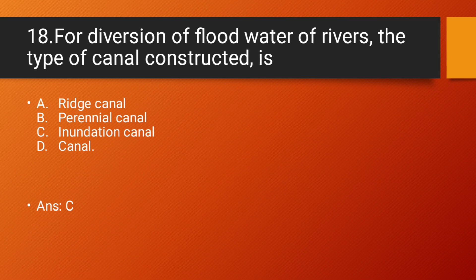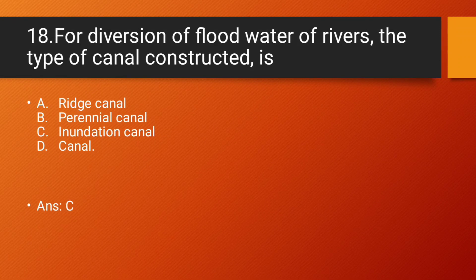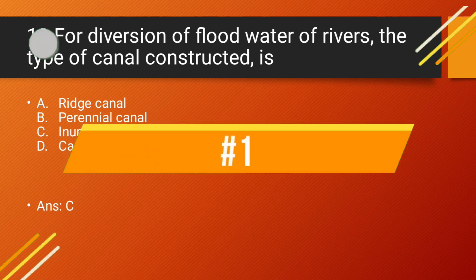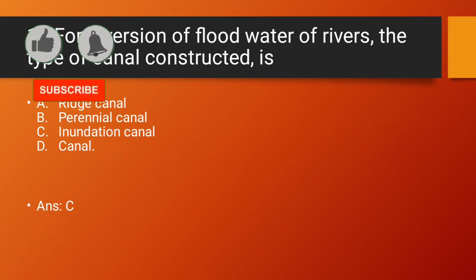Question number 18: For diversion of the flood water of rivers, the type of canal constructed is — Option A: Ridge canal. Option B: Perennial canal. Option C: Inundation canal. Option D: Canal. Answer: Option C — Inundation canal. For diversion of flood water of rivers, the type of canal constructed is an inundation canal.